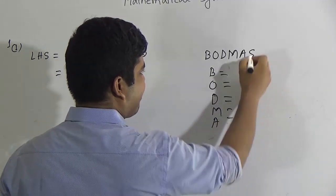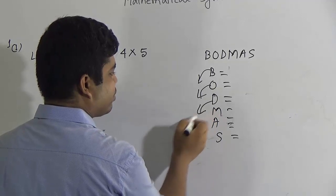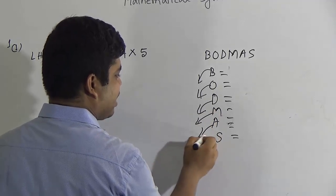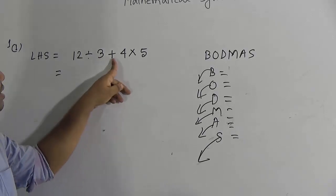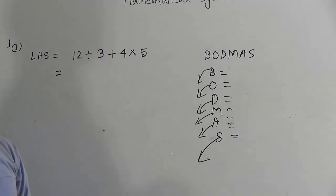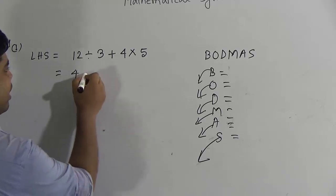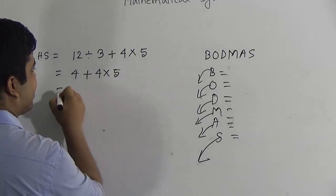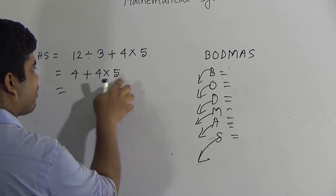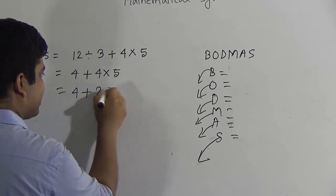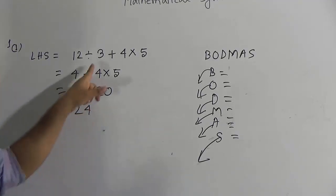Following BODMAS, we first do division: 12 divided by 3 gives 4. Then we have 4 plus 4 multiply by 5. Next we do multiplication: 4 times 5 is 20. Then addition: 4 plus 20 equals 24. So the left hand side equals 24.